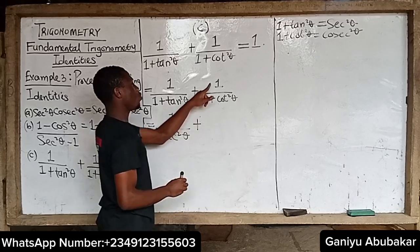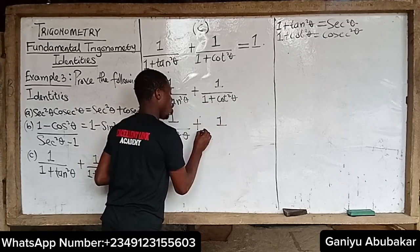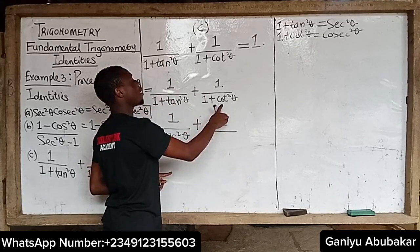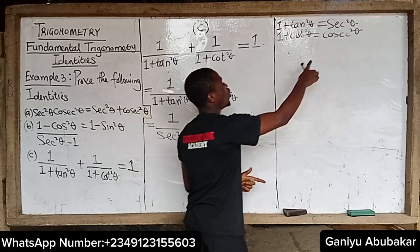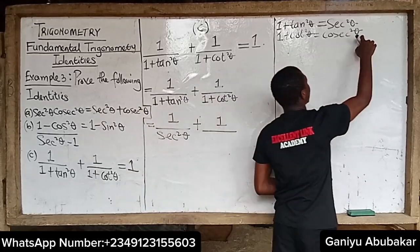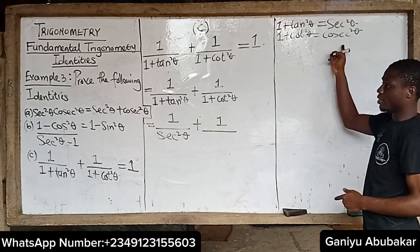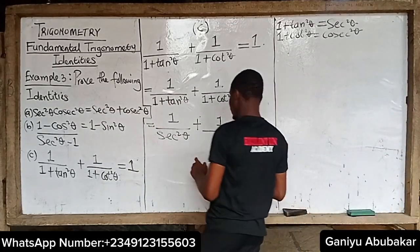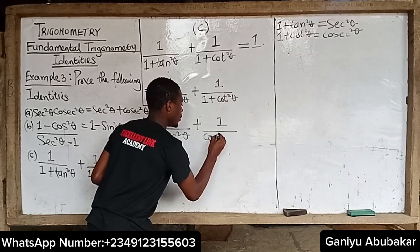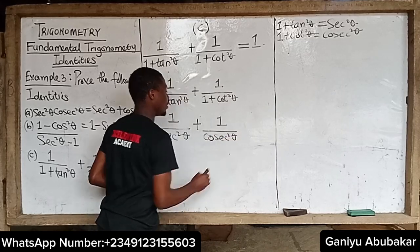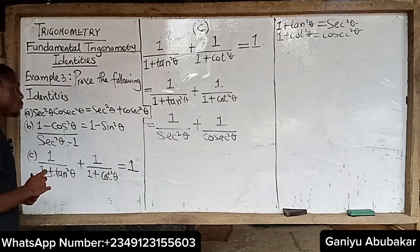The second term is one over one plus cot squared theta, which gives one over cosec squared theta, because one plus cot squared theta equals cosec squared theta. This also comes from our trig identities from last class.